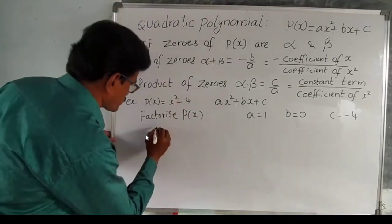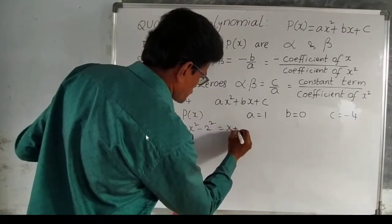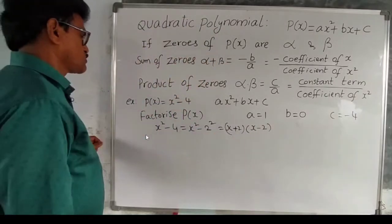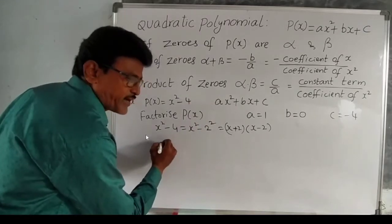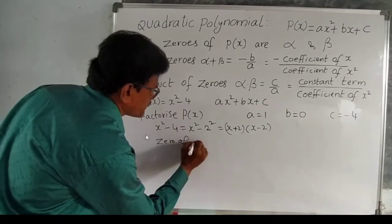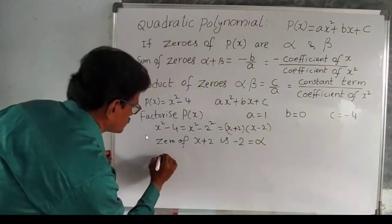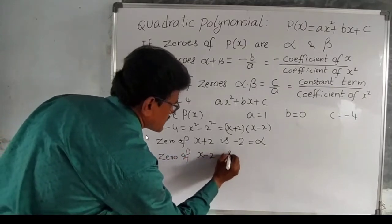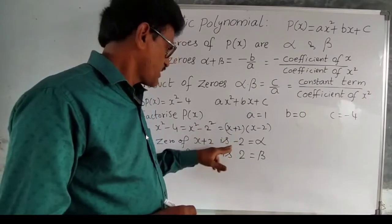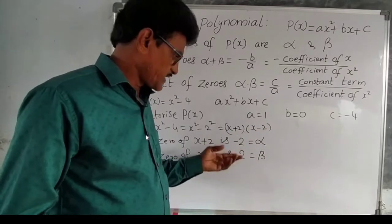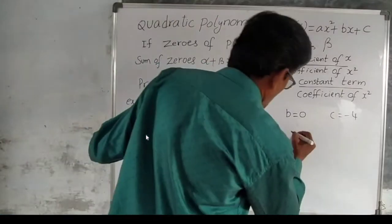Factorizing x² minus 4: x² minus 4 = x² minus 2² = (x + 2)(x minus 2) using the a² minus b² formula. So the factors are (x + 2) and (x minus 2). To find the zeros: x + 2 = 0 gives x = minus 2, take this as alpha; x minus 2 = 0 gives x = plus 2, take this as beta.